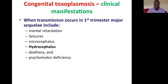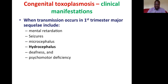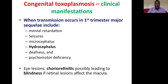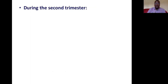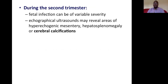The most important clinical manifestation to look for is hydrocephalus — the most common finding. Other manifestations include chorioretinitis on eye examination, which may lead to blindness as the child grows, and cerebral calcification on CT scan. These three — hydrocephalus, chorioretinitis, and cerebral calcification — are the classic triad of congenital toxoplasmosis.